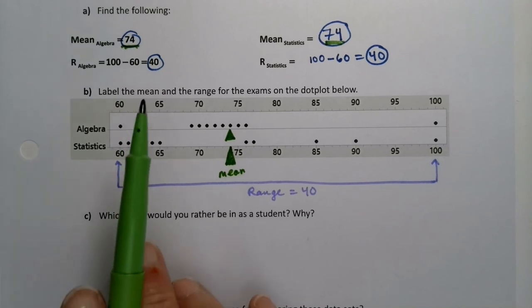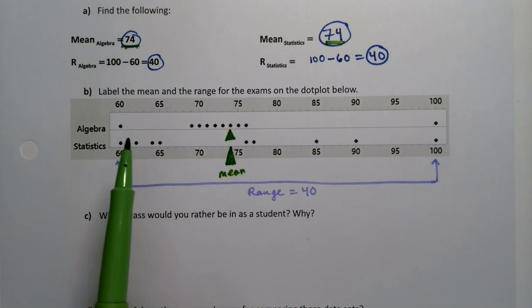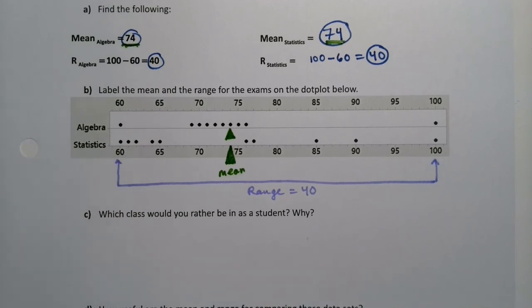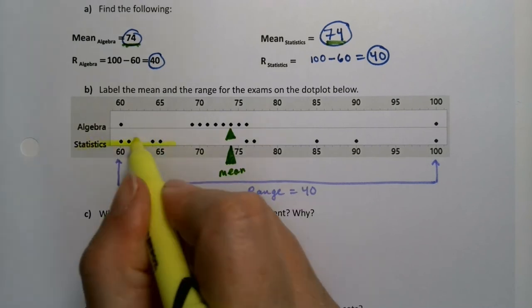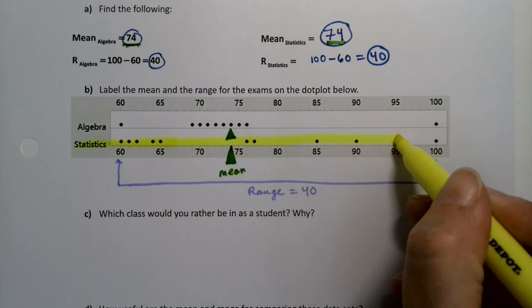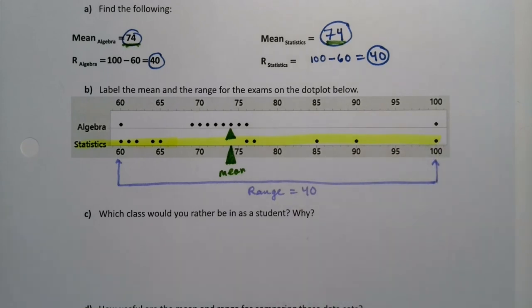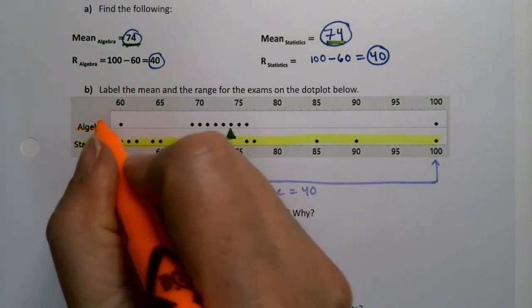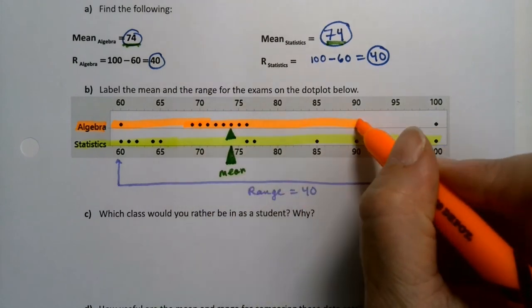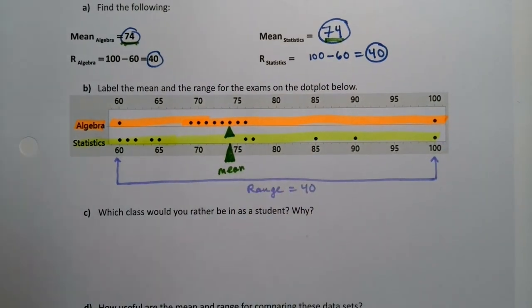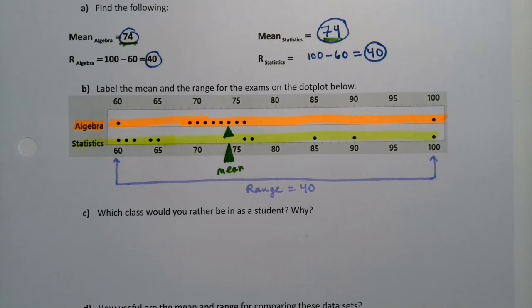So they both have the same mean, they have the same range, but they're not the same classes. So if you look at the stats exam, that's a different class. Look at those dots, than say the algebra exam. And by the way, these aren't real data. Most of the time, I'm trying for real data. But this particular time, I am not because I'm trying to make a point here. Trying to exaggerate something that can happen in real life. Alright, as a student, which would you have?